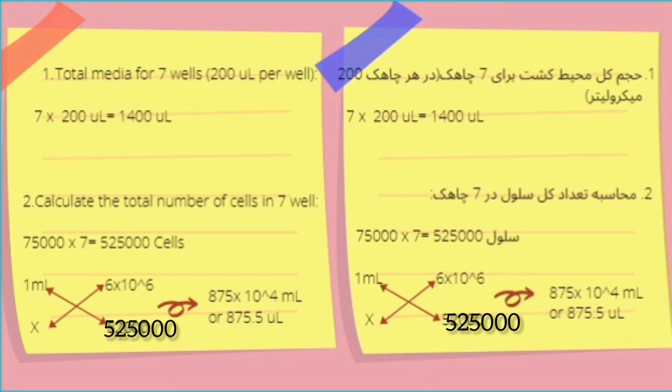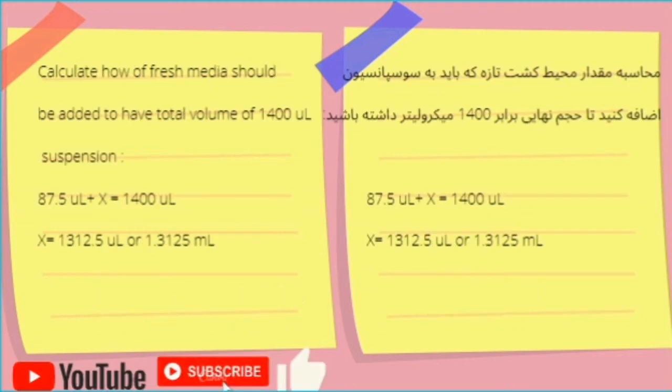Now calculate the total number of cells you want to seed, which is 75,000×7. Now you need to solve a very simple proportion: in one milliliter, we have 6×10^6 cells. How much suspension should we take to have 525,000 cells? We calculate that we need to take 87.5 microliters of our cell suspension to have our desired number of cells.